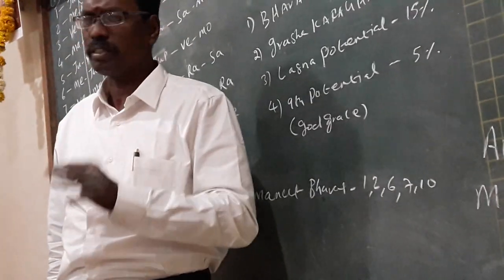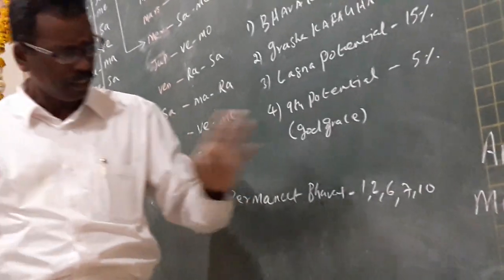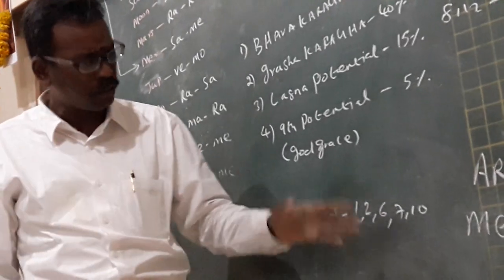Second house, money is important for all the people. Sixth house, return of money or disease. That is also very important.